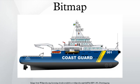In some contexts, the term bitmap implies one bit per pixel, while pixmap is used for images with multiple bits per pixel. A bitmap is a type of memory organization or image file format used to store digital images. The term bitmap comes from computer programming terminology, meaning just a map of bits — a spatially mapped array of bits. Now, along with pixmap, it commonly refers to the similar concept of a spatially mapped array of pixels.